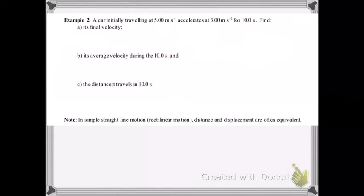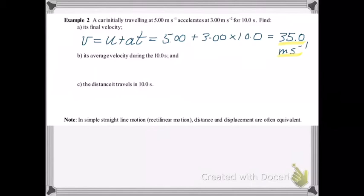Another calculation. A car initially travelling at 5 m per second accelerates at 3 m per second squared for 10 seconds. Find its final velocity to begin with. Alright, so we'll keep this simple. The final velocity is given by V equals U plus AT. Substituting the numbers and calculating, and you get 35 m per second.